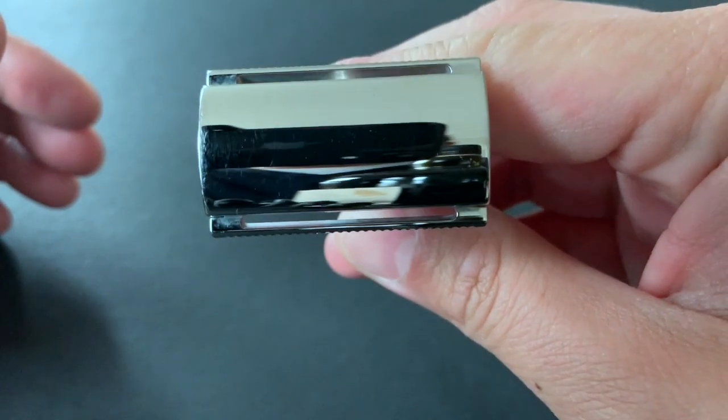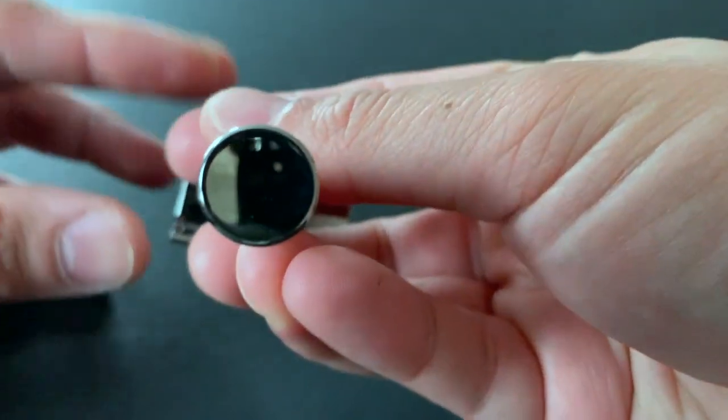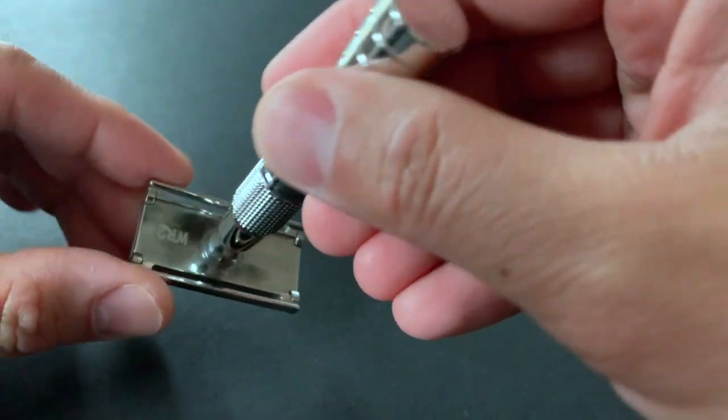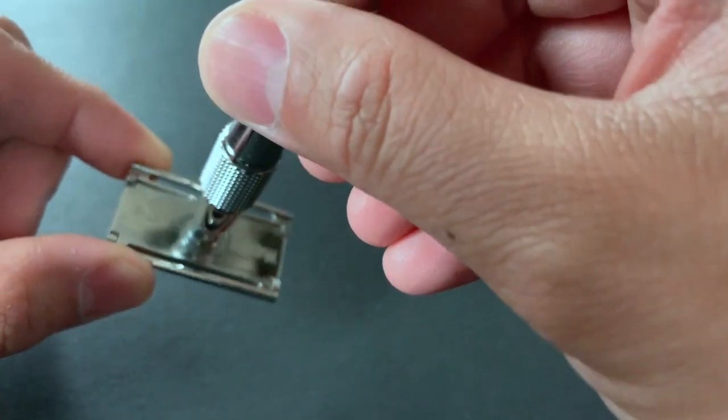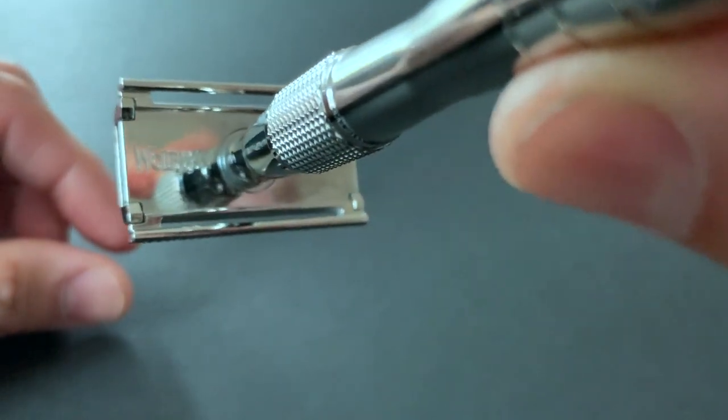The WR2 head is a mild shaver with a blade gap of 0.95 millimeters. To compare, mild razors that I have in my regular rotation include the Razor Rock Game Changer with the 0.68 millimeter blade gap as well as the Rockwell 6C on the R3 plate.